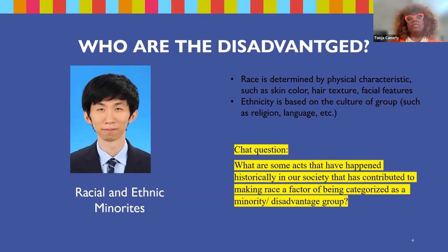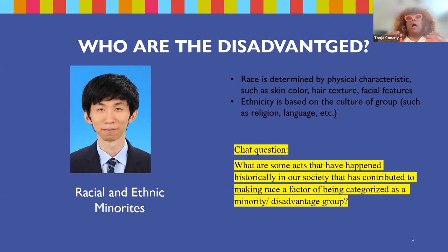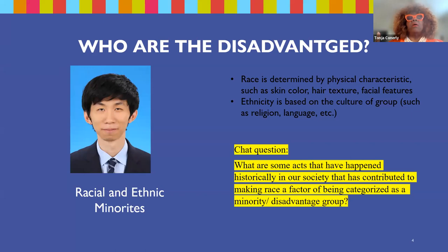When we talk about race, you need to know that race is a physical characteristic. We're looking at African American people, our Asian population, and our Native American population, because race is distinguished by physical characteristics. Ethnicity, on the other hand, looks at our Latino population, our Arab population, and what we call white ethnicity — meaning the Polish, our Irish, our Jewish population. With that in mind, I would like for you to put in the chat, knowing the information I've given you pertaining to the disadvantaged and minority population, what are some acts during history that have contributed to making race a factor and making race a minority or disadvantaged group?